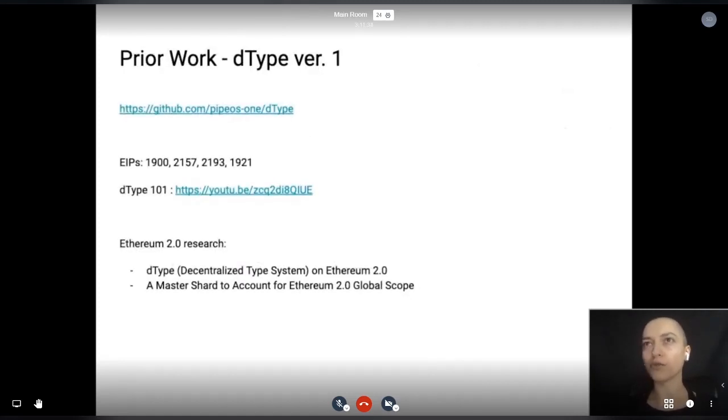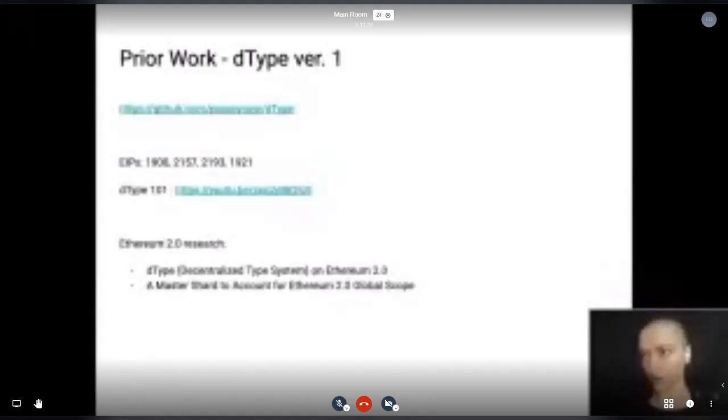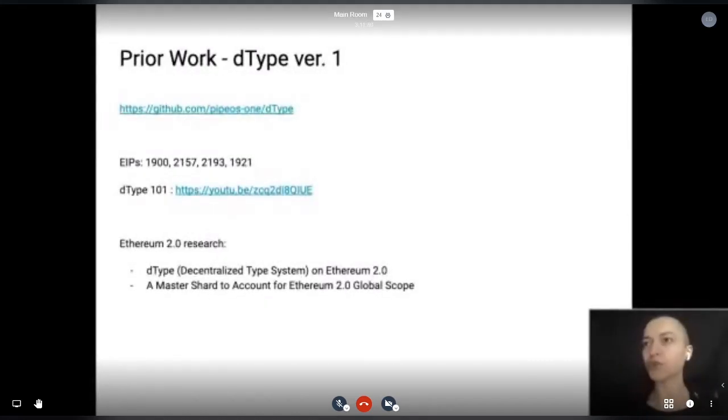First, our roots. dType version one was based on C-like structs, and it allowed us to start thinking about how such a system could be integrated in Ethereum 2.0. We advocated for having a special shard for the operating system components such as types, which would effectively act as a global scope for all other shards.